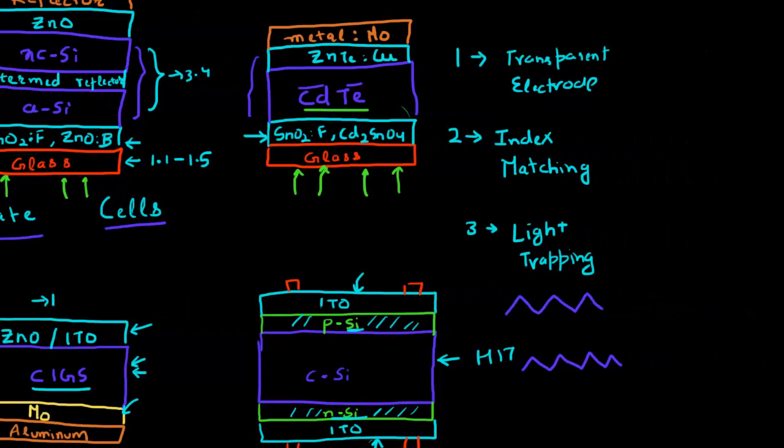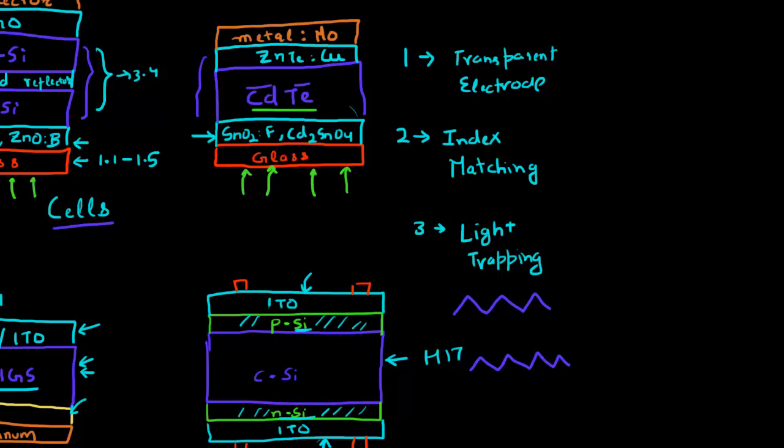So many times what people do is they texture this TCO material. They randomly texture this TCO material which is deposited on top or below your cell. So you enable this very fine texture on this TCO material, and that again helps in randomizing the incoming light and maximizing your light trapping.